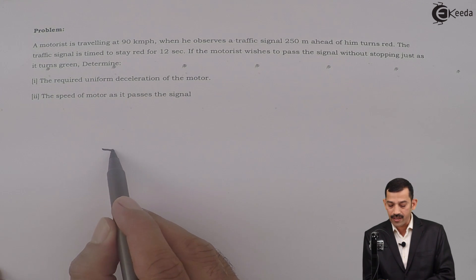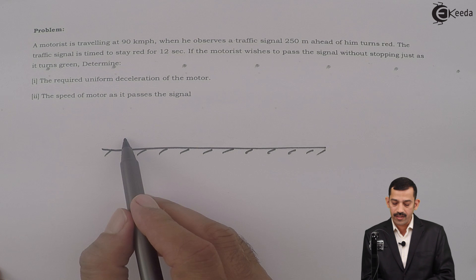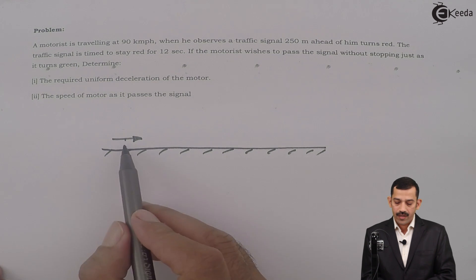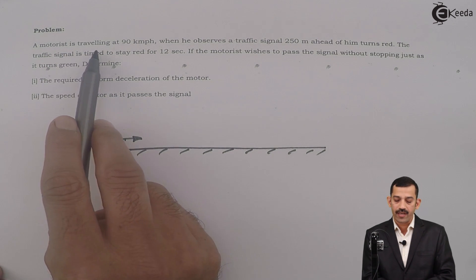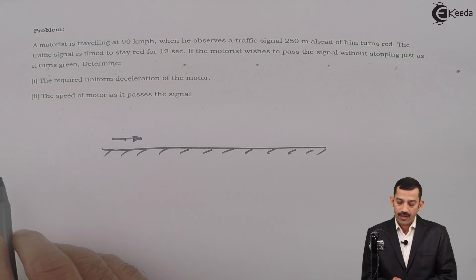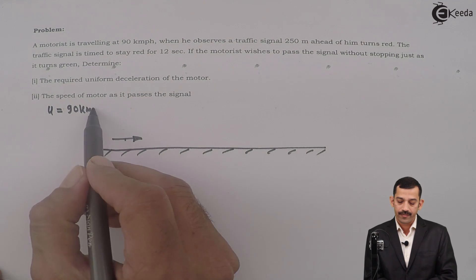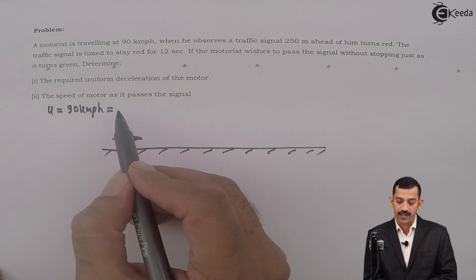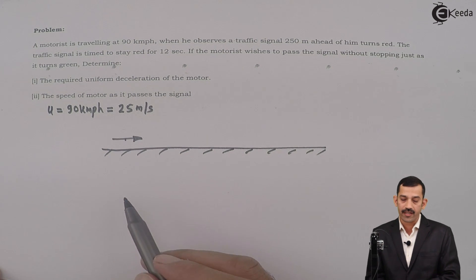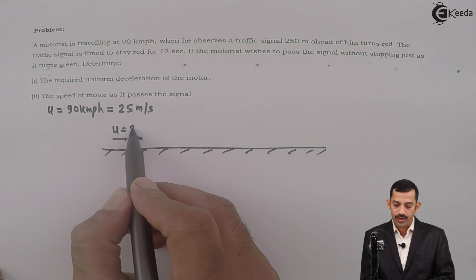This is a straight-line motion — the road — and the motor is at some location moving in the right direction. Its initial velocity is given: the motorist is travelling at 90 km per hour, so initial velocity U is 90 km per hour. Converting to meters per second, it comes out to be 25 meters per second, because 36 km per hour equals 10 meters per second. So U equals 25 meters per second.